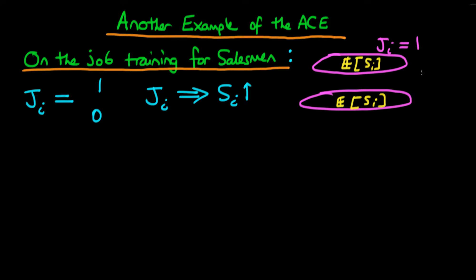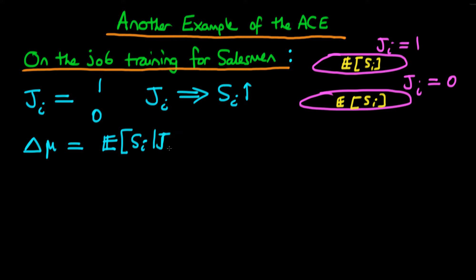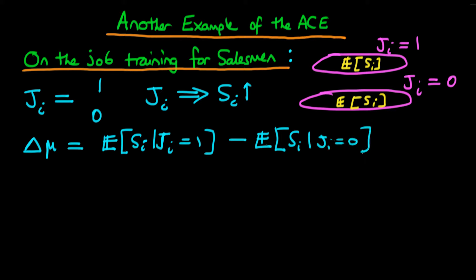The idea here is that individual candidates make the choice as to whether or not to receive the on-the-job training. Much like before, what we can do is calculate the simple difference in means. The difference in means is the expected level of sales for a candidate where ji is equal to one, minus the expected level of sales of a salesman when ji is equal to zero — in other words, for those candidates which didn't receive the on-the-job training.